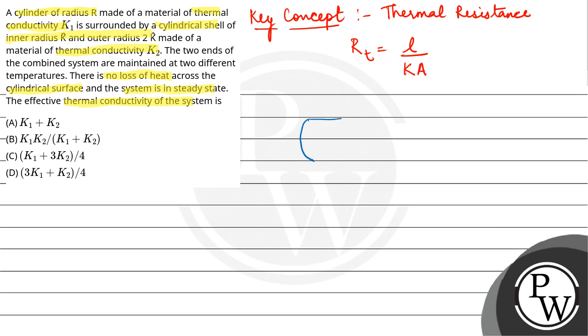Firstly, this radius given is R, and the other is a cylindrical shell. This inner radius is R and the outer radius is 2R.